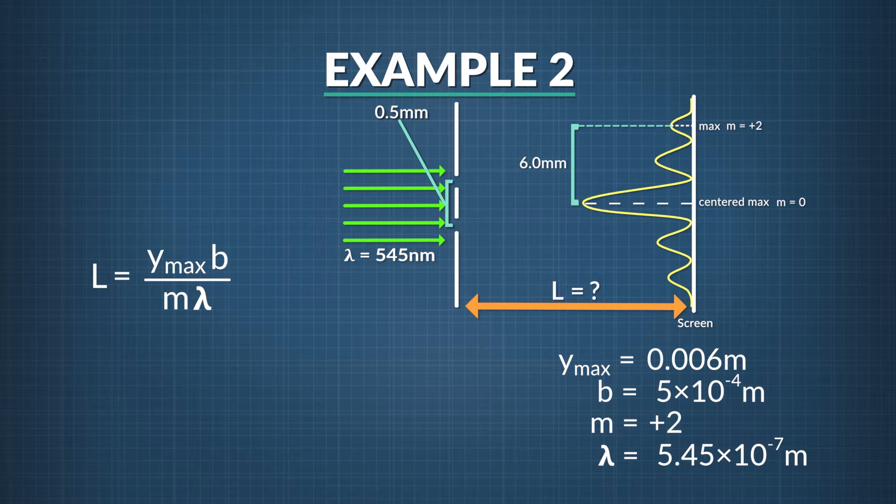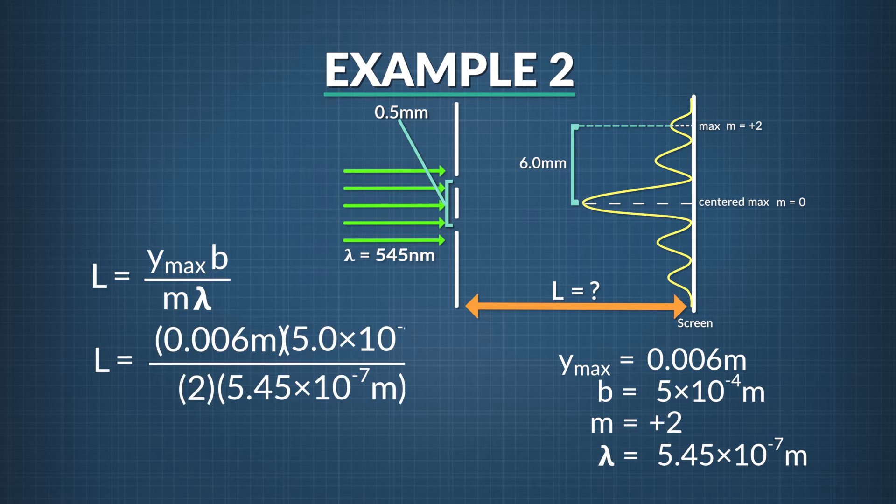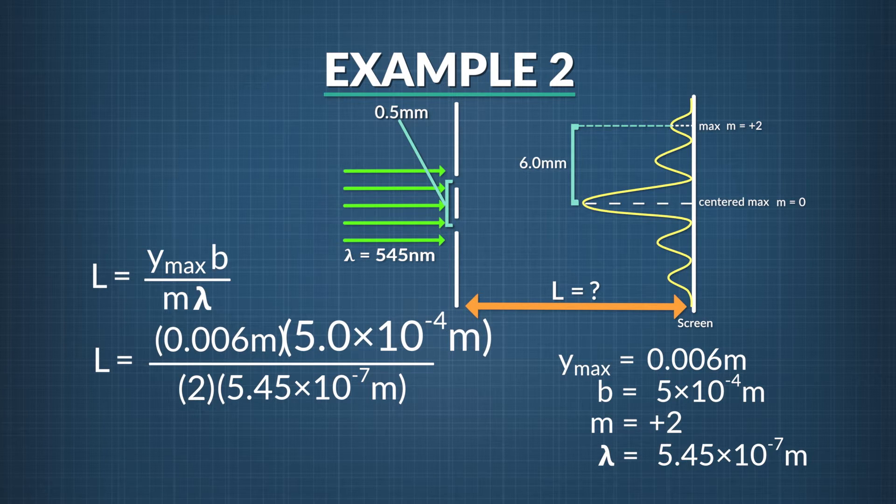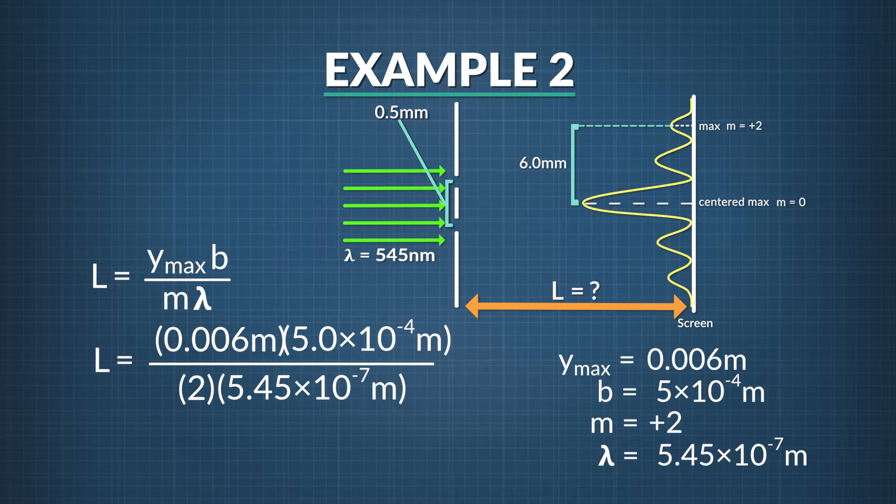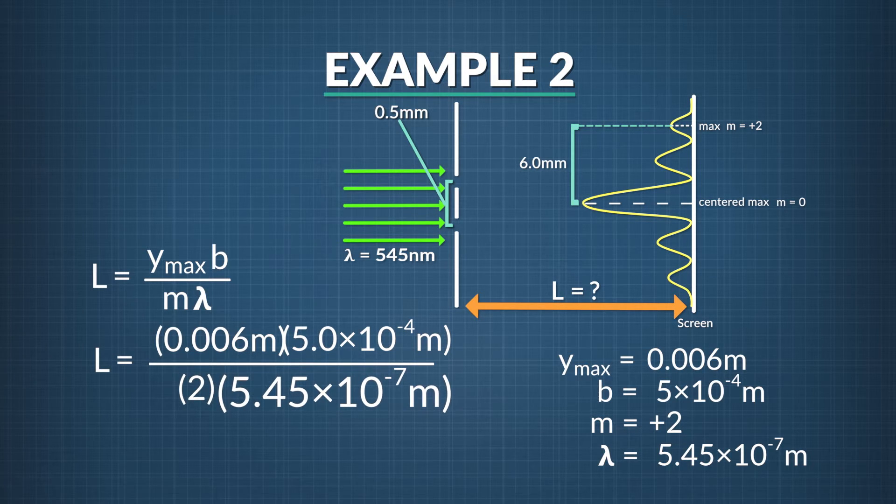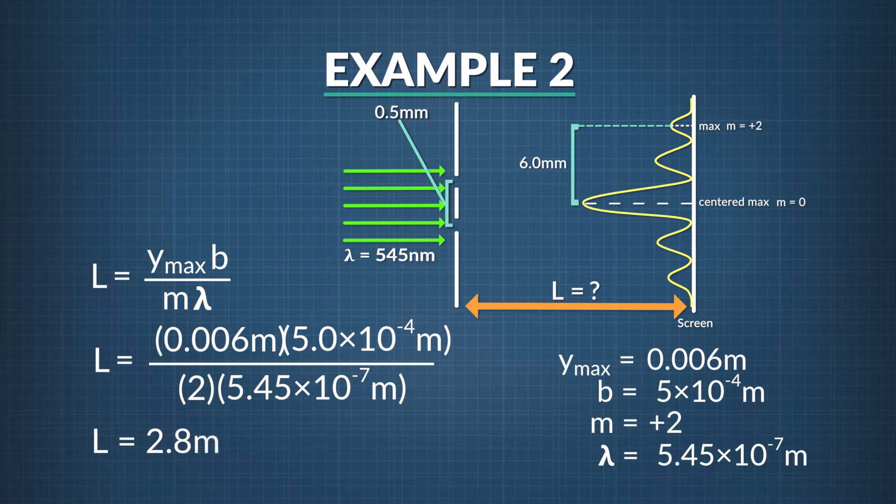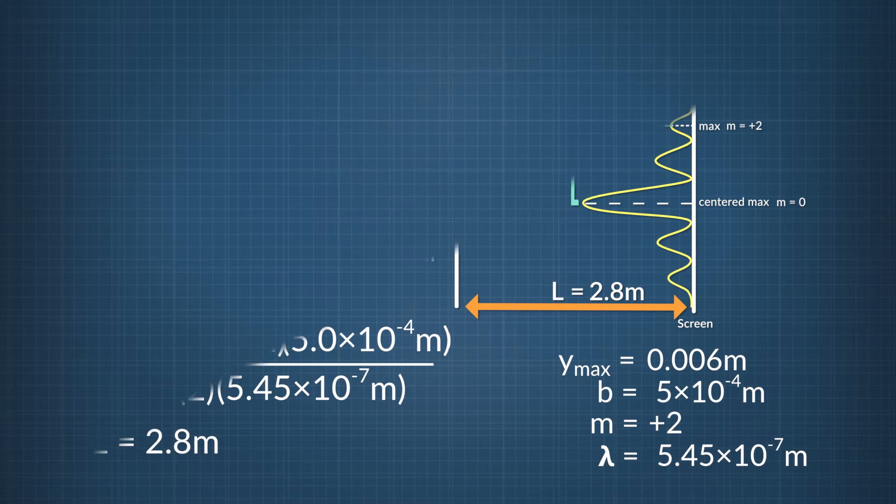With all these numbers figured out, we enter them into the equation to solve for L. L equals 0.006 meters times 5.0 times 10 to the negative 4th meters divided by the quantity 2 times 5.45 times 10 to the negative 7th meters, which equals 2.8 meters. That's how far the screen needs to be behind the slits in order for a pattern like the one we measured to appear.